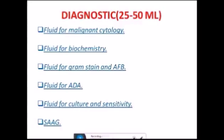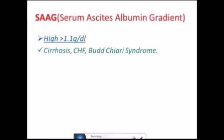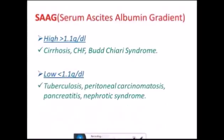The fluid is also sent for ADA, culture and sensitivity, and SAAG — Serum Ascites Albumin Gradient. A high SAAG (more than 1.1 g/dL) is seen in cirrhosis and congestive heart failure. A low SAAG is seen in tuberculosis, peritoneal carcinomatosis, pancreatitis, and nephrotic syndrome. High SAAG means serum protein is more than ascitic protein; low SAAG means serum protein is less than ascitic protein.